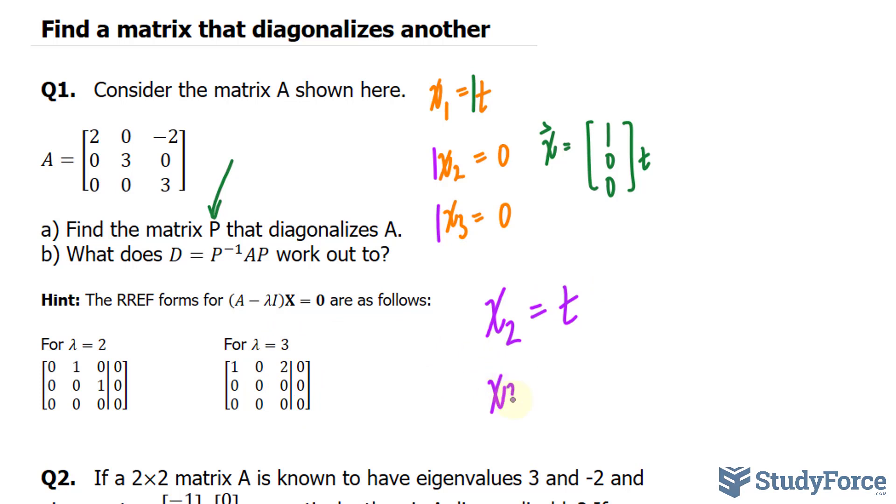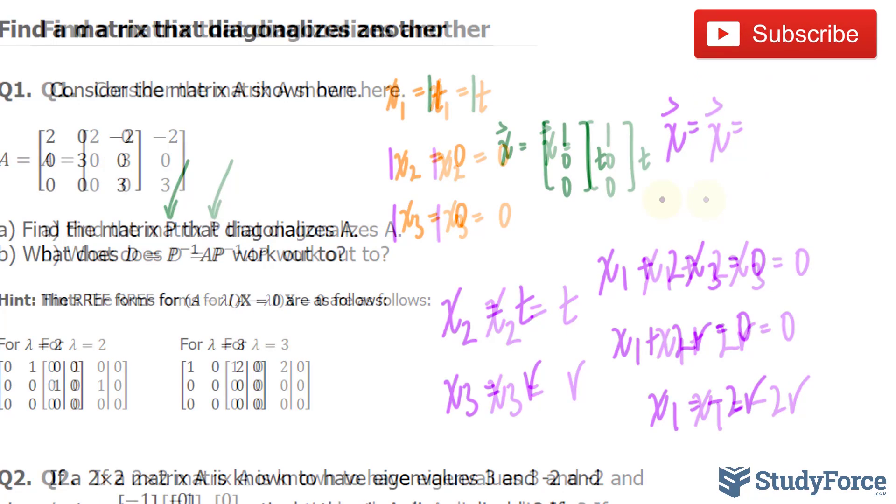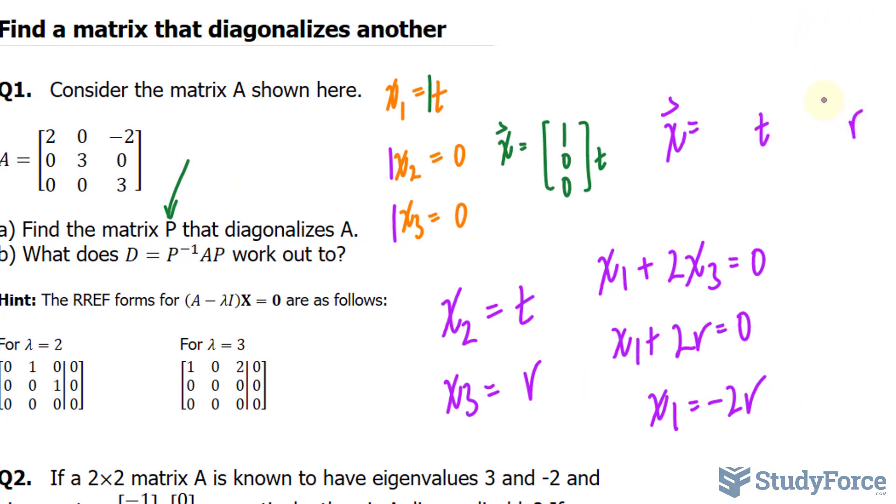I'm going to set x sub 2, since that column doesn't have a leading 1, as the parameter t, and I'll set x sub 3 as parameter r. Looking at the only row, we have x sub 1 plus 2 times x sub 3 is equal to 0. Substituting r into x sub 3, we get x sub 1 plus 2r is equal to 0, so x sub 1 is equal to negative 2r. That's another eigenvector that we just found.